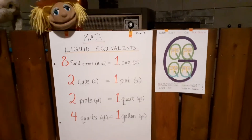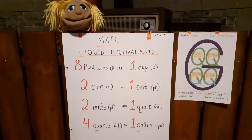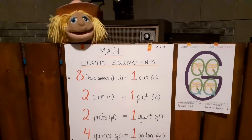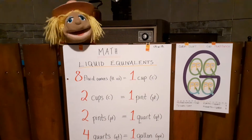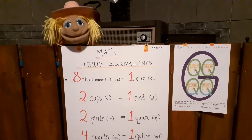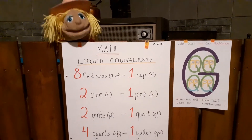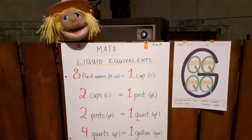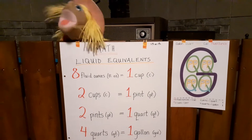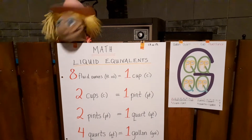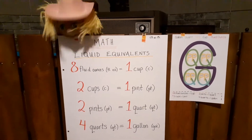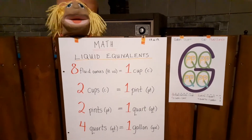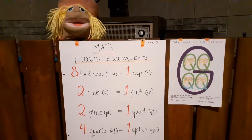Eight fluid ounces equals one cup. Two cups equals one pint. Two pints equals one quart. Four quarts equals one gallon.